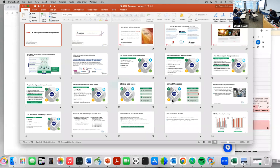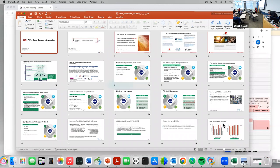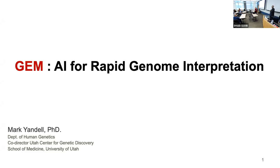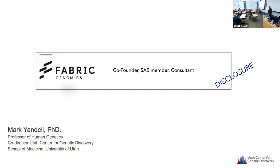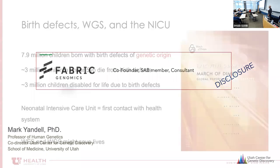Welcome. Today's speaker — Dr. Yandell — is speaking on artificial intelligence-enabled comprehensive genome interpretation and nomination of candidate diagnoses for rare genetic disease. That title was a bit long, so I've changed it to: GEM AI for genome interpretation. GEM is the name of an algorithm. I'm a co-founder, SAB member, and consultant for Fabric Genomics, which played a major role in what I'll present today.